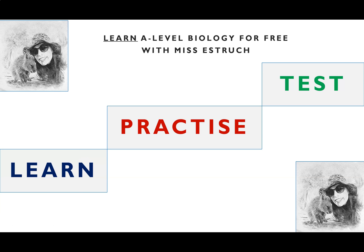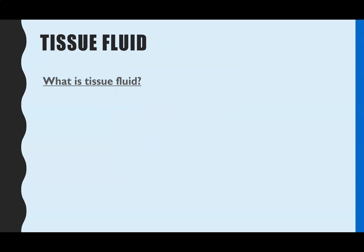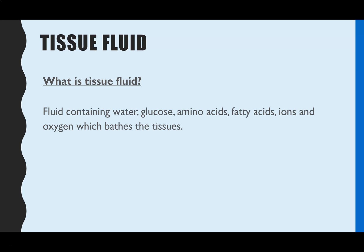Hello and welcome to learn A-level biology for free with Miss Estrick. This video is going to go through tissue fluid: what it is, how it's formed, and how the water gets reabsorbed. Tissue fluid is the liquid which surrounds the cells in your body — a group of cells performing the same function is a tissue. This fluid contains water, glucose, amino acids, fatty acids, dissolved ions and minerals, and oxygen, and that liquid surrounds your tissues.